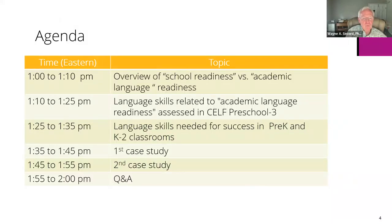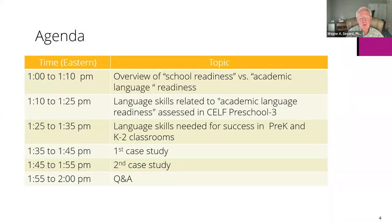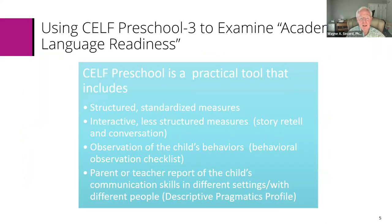The agenda today covers one hour. The first 10 minutes will be an overview of school readiness versus academic language readiness. The next 10-15 minutes will cover up to 125 language skills related to academic language readiness assessed with SELF Preschool 3. From there we'll go over language skills needed for success in pre-K and K-2 classrooms. Then we'll cover practicality aspects, one case study, a second case study, and five minutes for questions at the end.